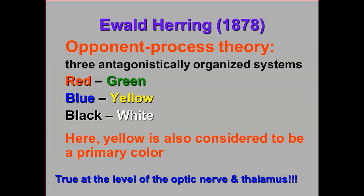Here's what he was suggesting. He was suggesting that in our visual system there are units — today we know there are cells — that are going to change their firing rate when exposed to red light, get excited by red light, and then also be inhibited by green light. There are other units or cells in the visual system that are excited by green and inhibited by red. According to Herring, there are also units that are excited by blue and inhibited by yellow, or excited by yellow and inhibited by blue.